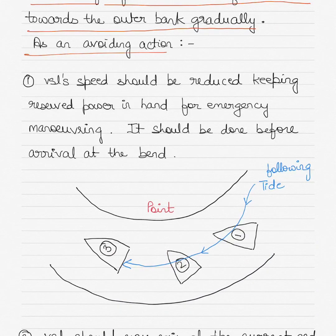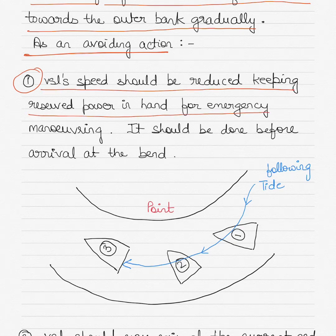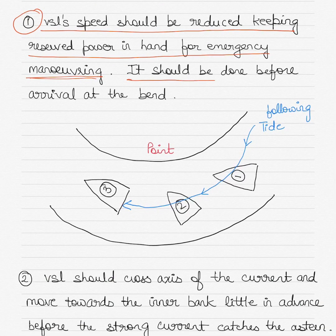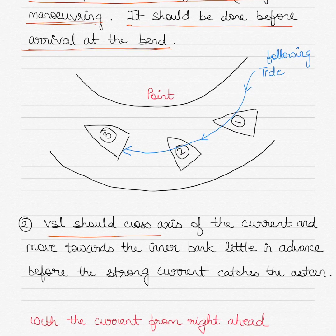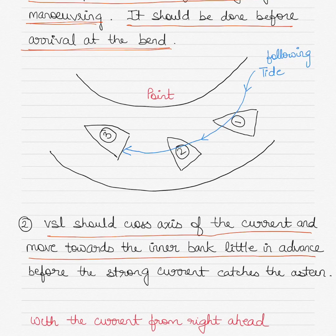As an avoiding action, the vessel's speed should be reduced, keeping reserve power in hand for emergency maneuvering. This should be done before arrival at the bend. The vessel should cross the axis of the current and move towards the inner bank a little in advance, before the strong current catches the stern and pushes it towards the inner bank causing a grounding.